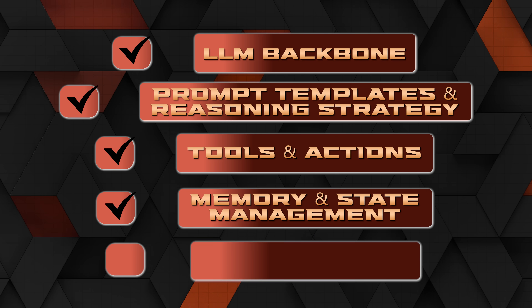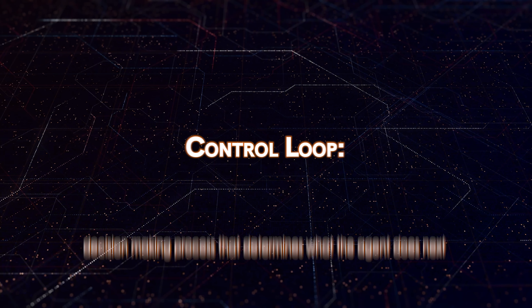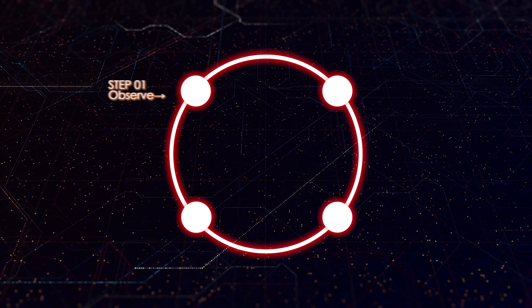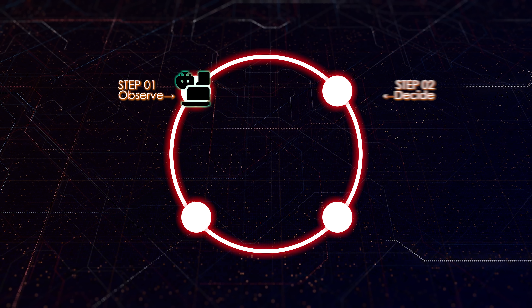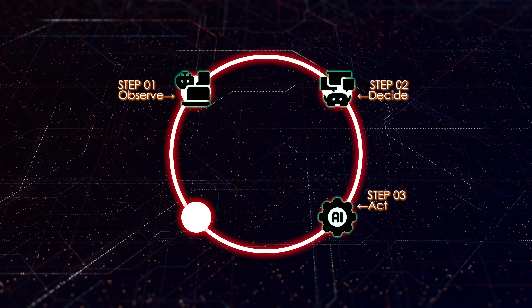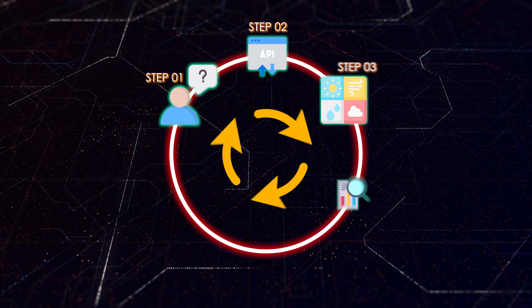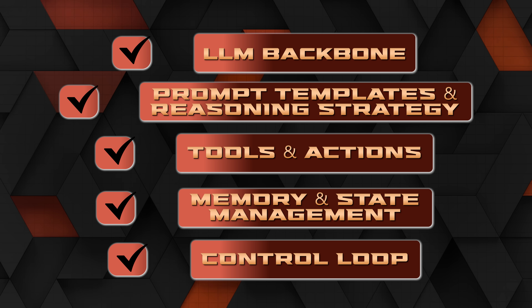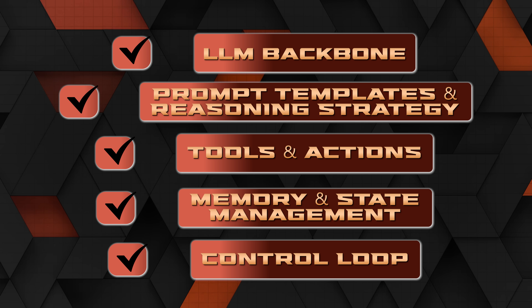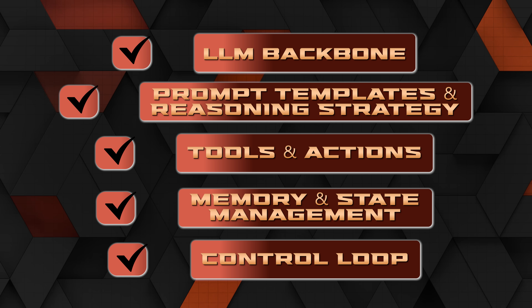Finally, at the heart of every AI agent is the control loop — the decision-making process that determines what the agent does next. It continuously cycles through observing the current state, deciding what action to take based on goals and available tools, executing that action, observing the result, and then repeating the process. So those are the five components: the LLM backbone, prompt templates and reasoning strategies, tools and actions, memory and state management, and the control loop, which form the foundation of any AI agent.